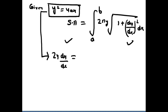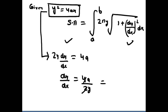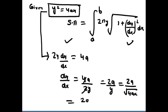So 2y dy/dx = 4a, which gives dy/dx = 4a / 2y = 2a / y. Substituting y = √(4ax), we get dy/dx = 2a / (2√(ax)) = a / √(ax) = √(a/x).